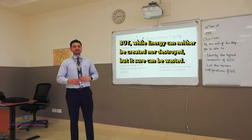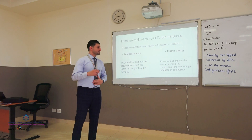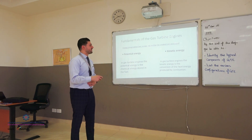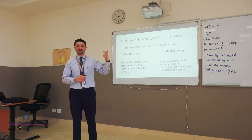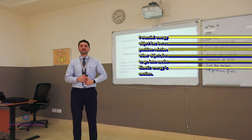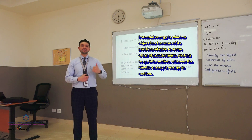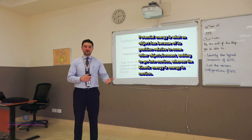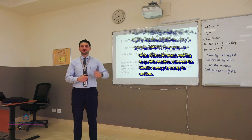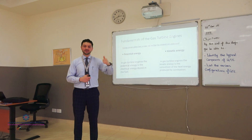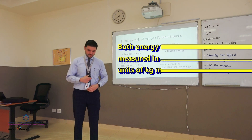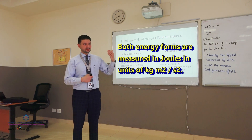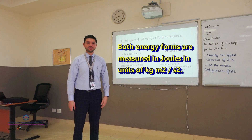In order to operate gas turbine engines, we need energy. The energy conservation law states that energy cannot be created nor destroyed, but changes from one form to another. For gas turbine engines, energy is classified as two types: potential and kinetic. The potential is the stored chemical energy in the fuel, transferred to kinetic energy via combustion to operate the gas turbine engine.